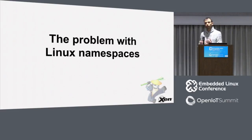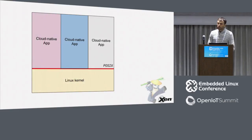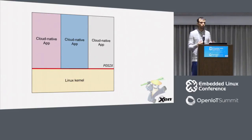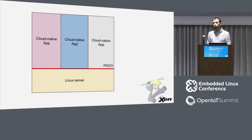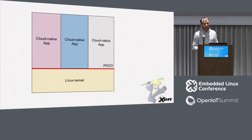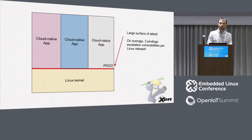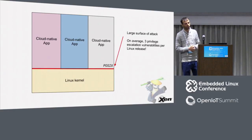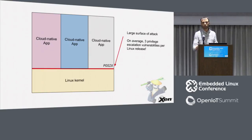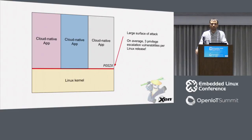Linux namespaces are okay for some use cases, but not for all. Why? Because Linux namespaces are based on a single kernel instance on top of which all the applications run using separate namespaces. However, the syscall interface exposed by the kernel to the application is quite large and it's kind of difficult to secure. This calculation is a bit old and it's very difficult to find the precise number of privilege escalation vulnerabilities, but the last time somebody counted, they found about three for every Linux release.